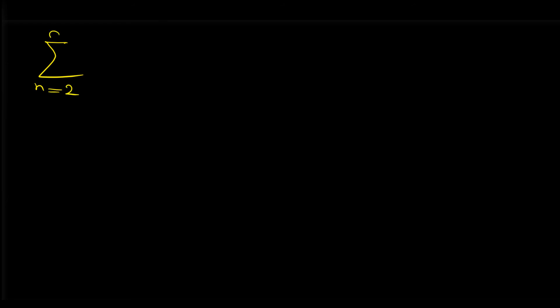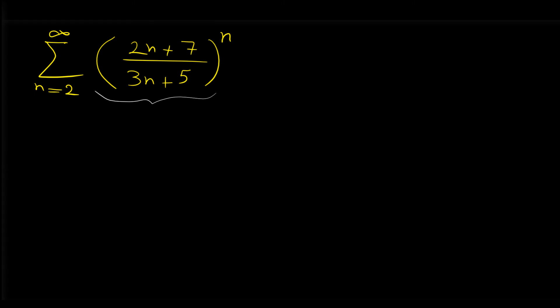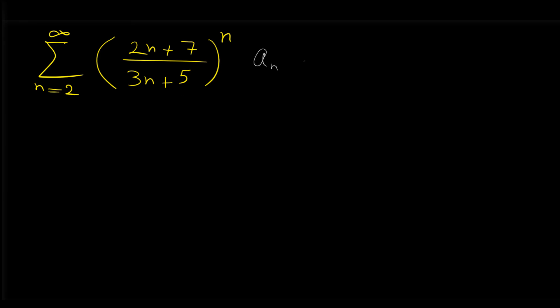Let's do another example: sigma n from 2 to infinity of (2n plus 7) over (3n plus 5), all to the power of n. We want to use the root test to determine the convergence or divergence of this series. By looking at the general term, it is obvious that using the root test is a good idea, because the general term is in the form of some expression to the power of n. Let's name a sub n to be (2n plus 7) over (3n plus 5), all to the power of n.